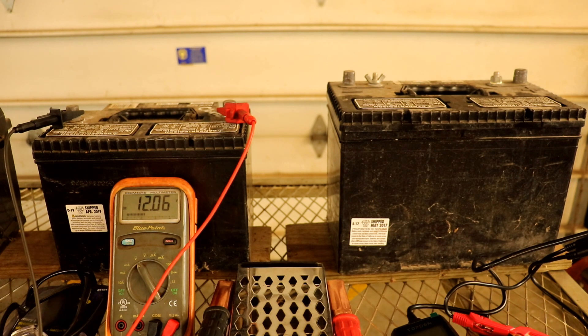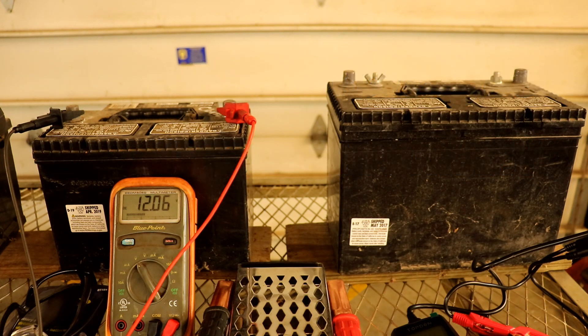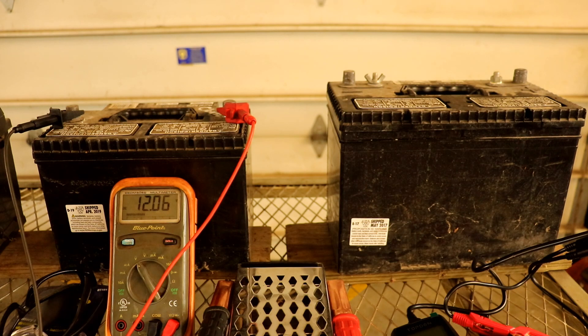A battery of 75% charge has 12.4. A battery of 50% charge has 12.2. And 11.9 volts is considered discharged.